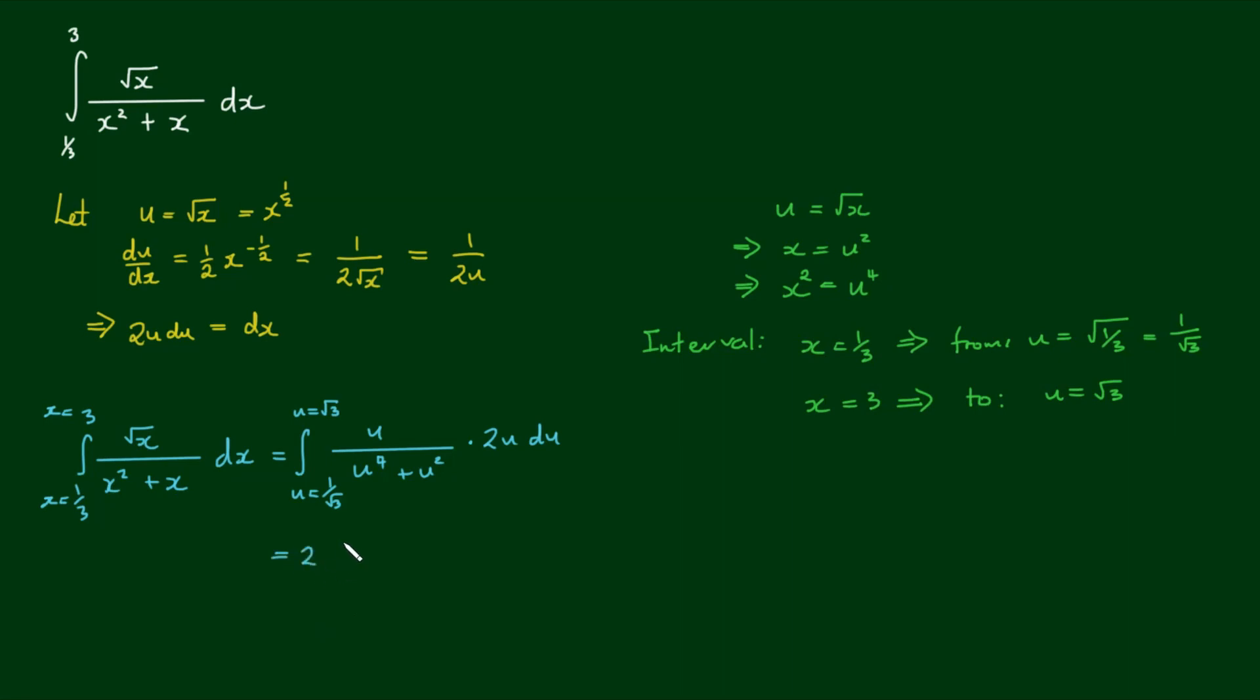So the two can come out the front. We have two by the integral of one on root three to root three of u squared divided by u to the fourth plus u squared du. So we've rationalized the integrand, and we can make further simplifications by factoring out a u squared on the bottom. So if I take a u squared out on the bottom, the u to the fourth becomes u squared. So we have u squared plus one by u squared. Now because u is never equal to zero over the interval, I can simply cancel out the u squareds on the top and bottom.